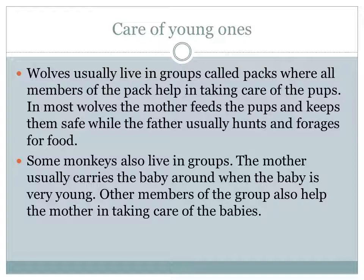Reproduction by giving birth to young ones: animals such as dogs, monkeys, and rabbits do not reproduce by laying eggs — instead they give birth to their young ones. These animals are called viviparous animals.